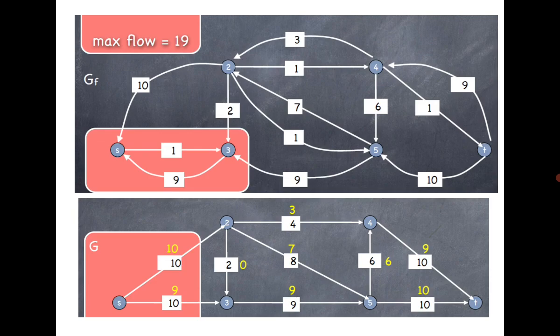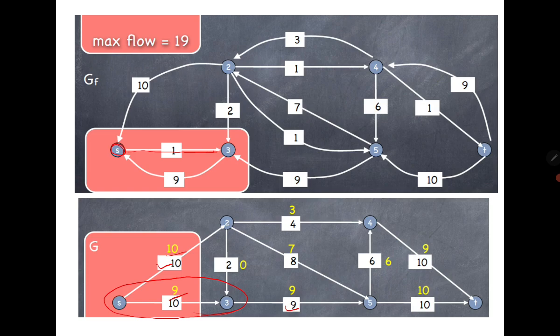Let's see an example. The maximum flow is 10 and 9. In the final residual graph, from s I cannot go to 2, but I can go to 3, and from 3 I cannot move further. So the minimum cut is {s, 3}. Its capacity is 10 plus 9 which is 19, equal to the value of the maximum flow. For another cut such as {s, 2, 3}, its capacity is 4 plus 8 plus 9 which is 21 — more than 19. So 19 is confirmed as the minimum cut.